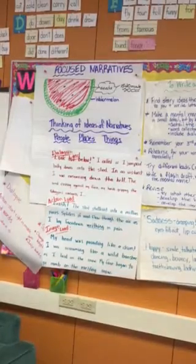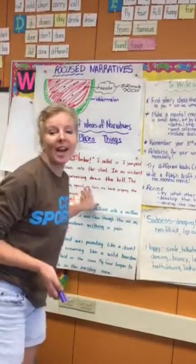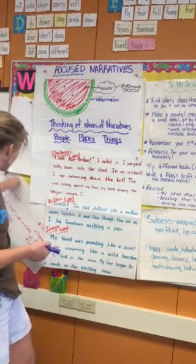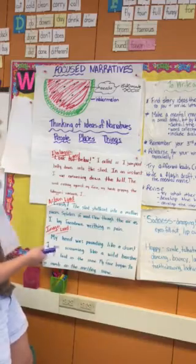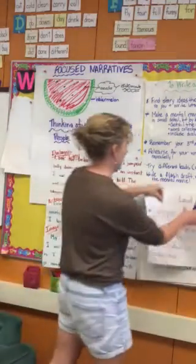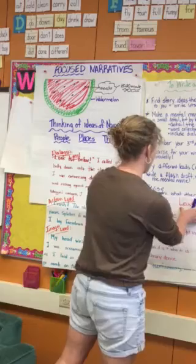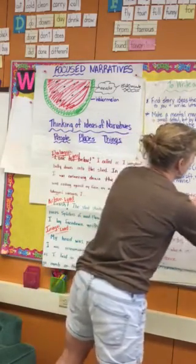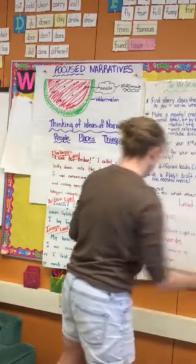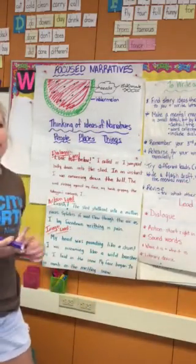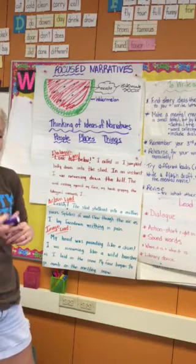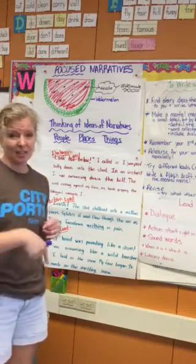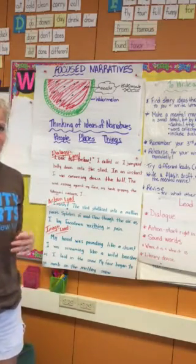Another way to make your writing more interesting is to try different leads on for size. We talked about a bunch of different ways that we could start our narratives — maybe with dialogue, maybe with action, maybe with sound words. We could just tell where your story is and who's in it. We could use a literary device, maybe a simile or a metaphor or alliteration. We could use a surprise start, an ending start. There are so many different ways to start our stories.